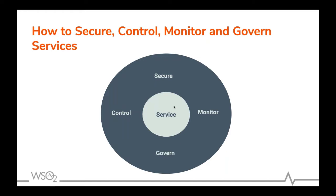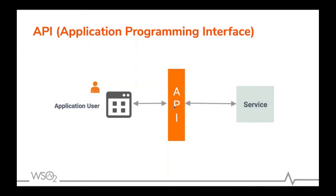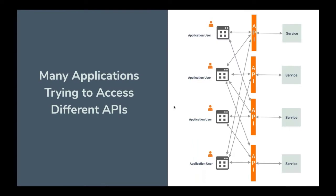That layer wraps up the service and guarantees security, control, monitoring, and governance. We call that layer an API — an Application Programming Interface. The API lies between the client application and the service: the client communicates to the API, and the API communicates to the service. Since many applications may use many services, there is a many-to-many relationship, meaning we should have many API layers in between. In a real-world scenario, we need to manage all these APIs.